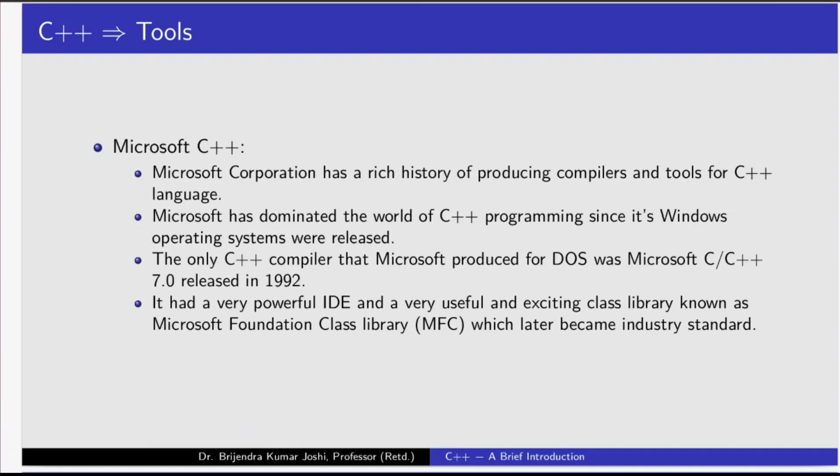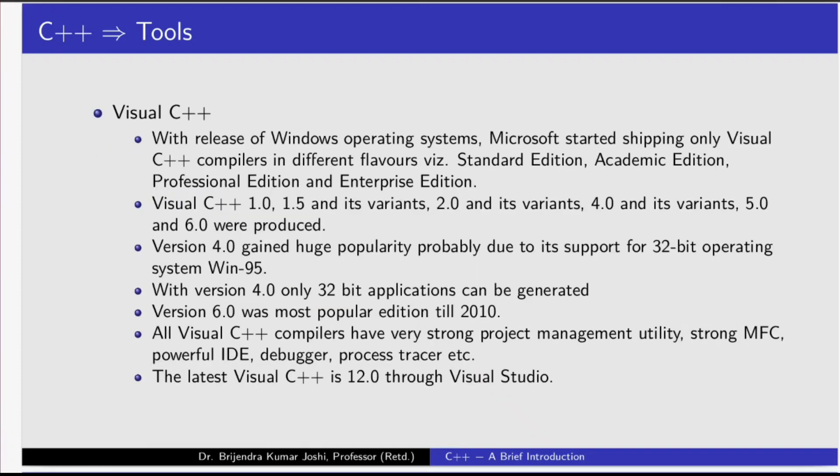Then comes Microsoft C++. Microsoft Corporation has a rich history of producing compilers and tools for the C++ language. Microsoft has dominated the world of C++ programming since its Windows operating systems were released. The only C++ compiler that Microsoft produced for DOS was Microsoft C, C++ 7.0 released in 1992. It had a very powerful IDE and a very useful and exciting class library known as Microsoft Foundation Class library, which later became the industry standard. With the release of Windows operating systems, Microsoft started using Visual C++ compilers in different flavors.